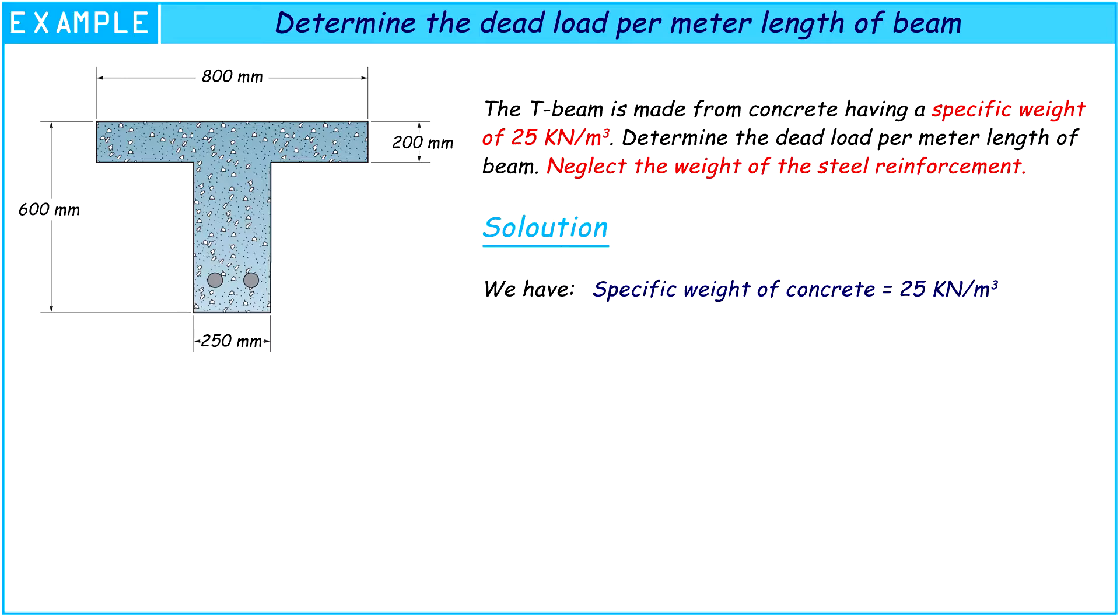Let's see the picture. It is the T-beam. First, we need to calculate the area of that beam. As we see, we need to divide that area of beam into two parts to make calculating easier: Part A and Part B.